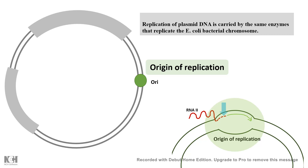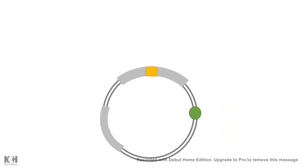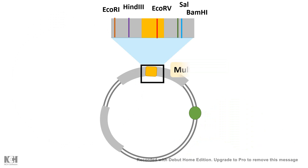A plasmid inside a bacterium needs to replicate when the bacterium is growing. The plasmids must be replicated and segregated just like the bacterial chromosome. Therefore the origin of replication inside a plasmid is very important.